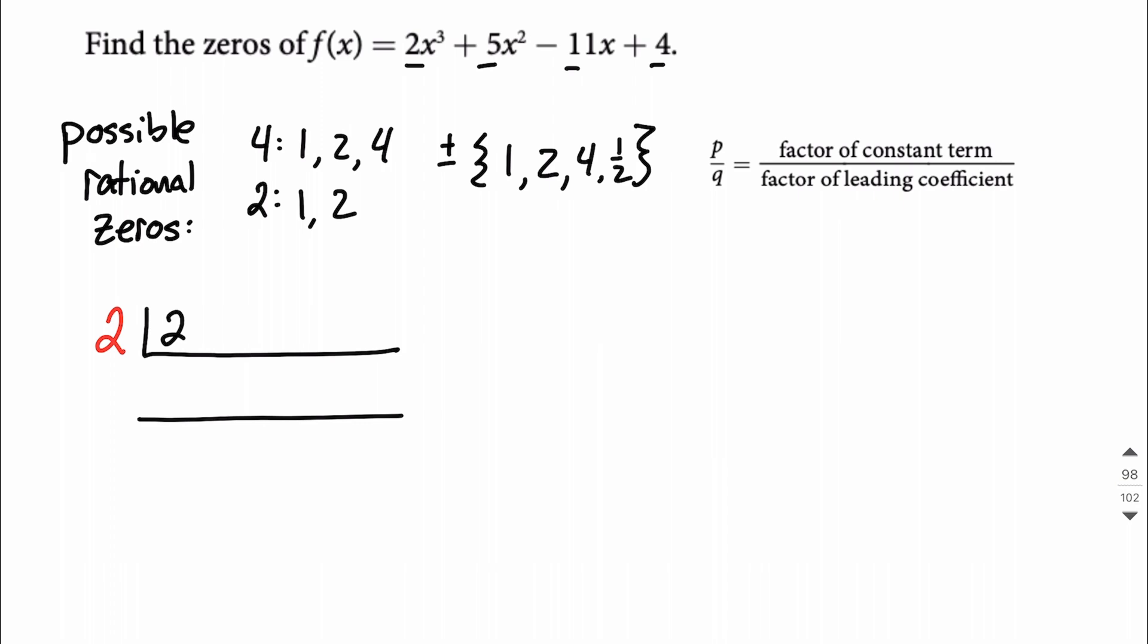So that goes as positive 2, 5, negative 11, and 4. And then remember, for synthetic division, what we're going to do is first multiply, and then we add. And we just keep repeating this process until we're done.